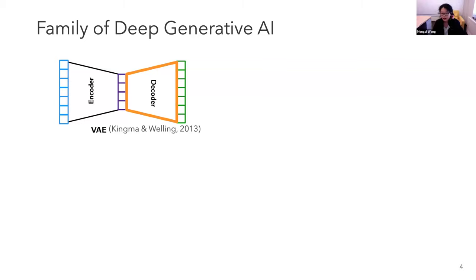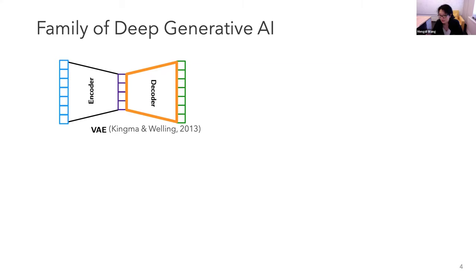As a byproduct of compression, people realized that now we have a decoder. What if we only work with this decoder and feed in a random Gaussian vector as input? It turns out that if this decoder is trained well, it can map even a random input into something that makes sense. People realized this decoder is fun for generation - this is the very beginning of generative AI models.